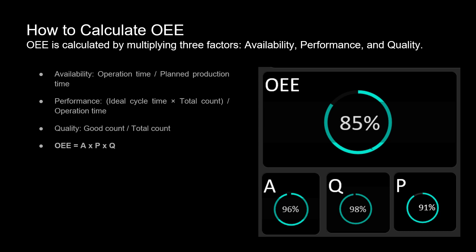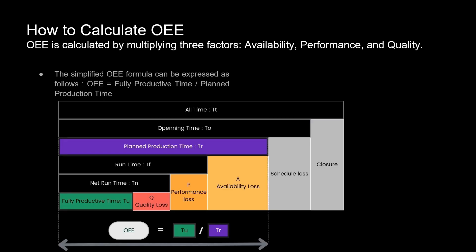Quality is the score of your good products — it's calculated by dividing the good count by the total count of parts produced. Here's a simplified way to understand the OEE formula: OEE equals fully productive time divided by planned production time. Think of fully productive time as when your machines are producing good parts without breakdowns or slowdowns. Planned production time is the schedule you've set for production to happen.